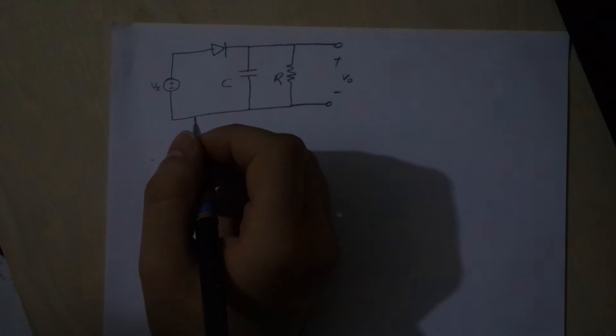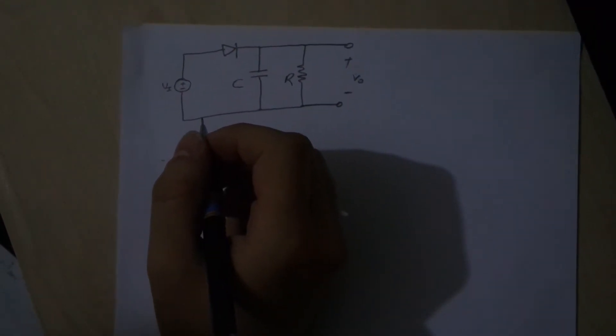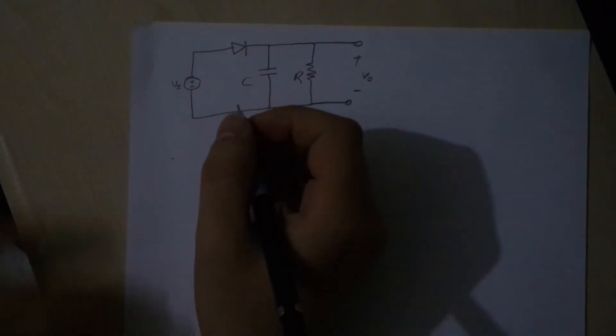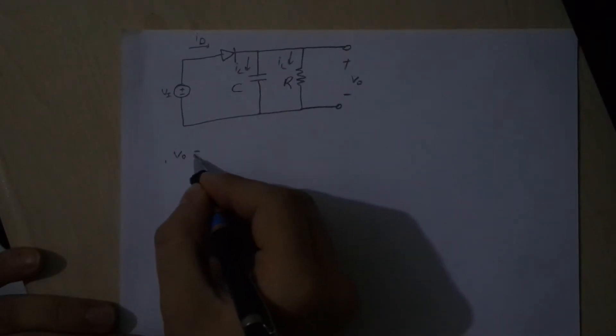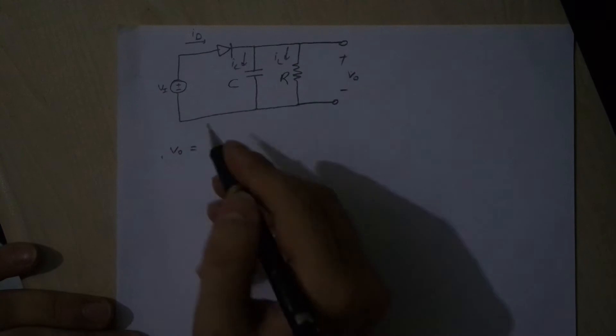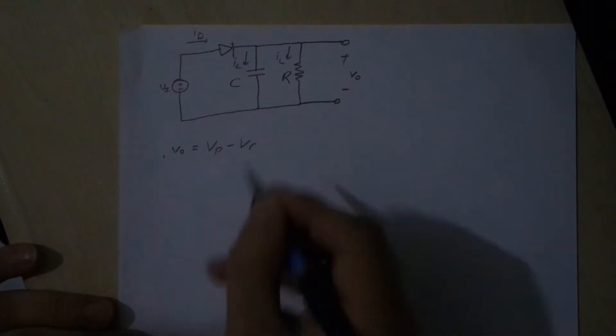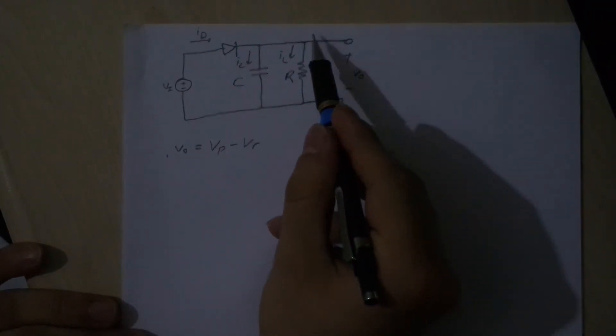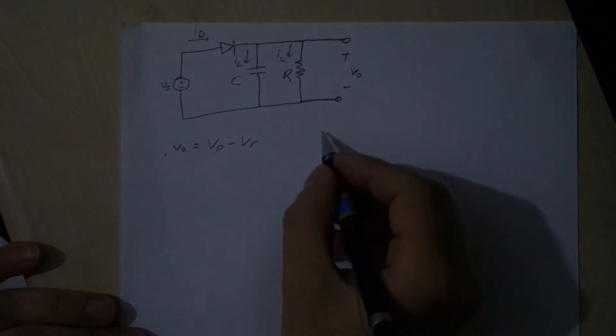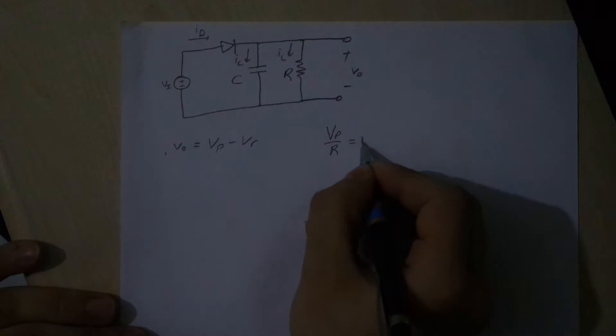Hello, welcome to my YouTube channel. Today I will describe half-peak rectifier, average current. As you can see, we have a circuit. This is current ID, this is IC, and this is IL. This is the output voltage V0. We have ripple voltage VP minus VR.